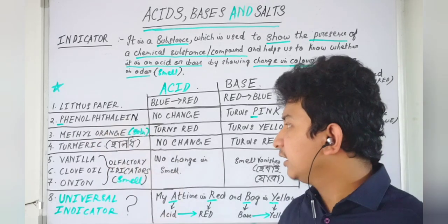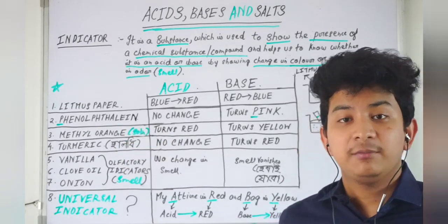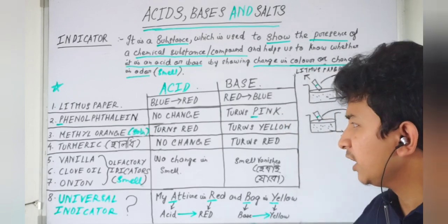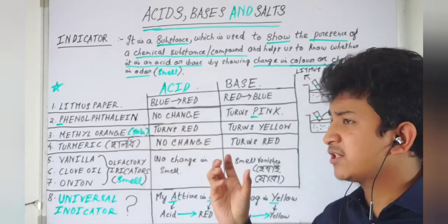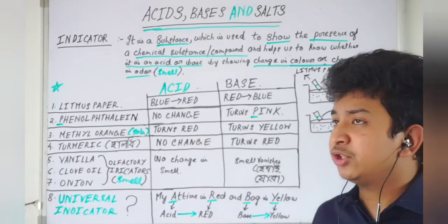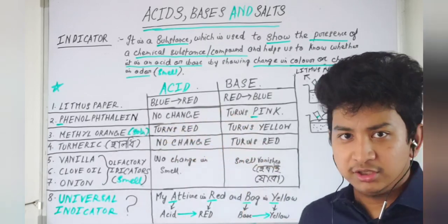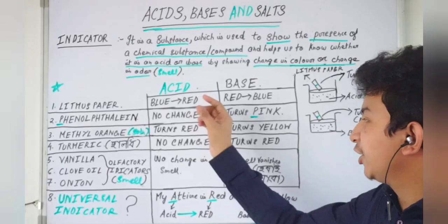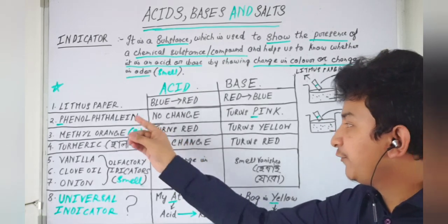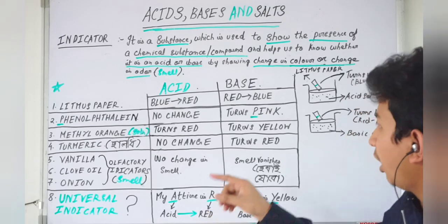The second indicator is phenolphthalein. Phenolphthalein is itself a colorless solution. When we add this to an acidic solution, there is no color change. But when phenolphthalein solution is added to a base solution, the color turns pink. This indicates that it is a base solution.